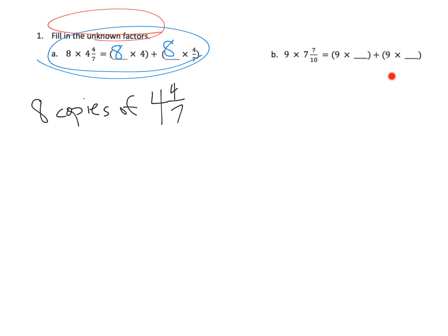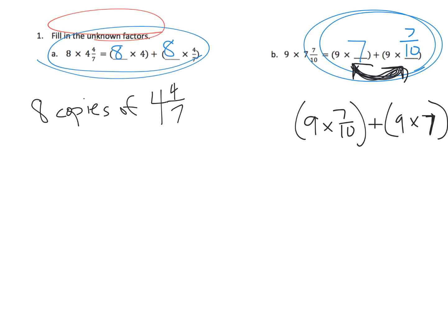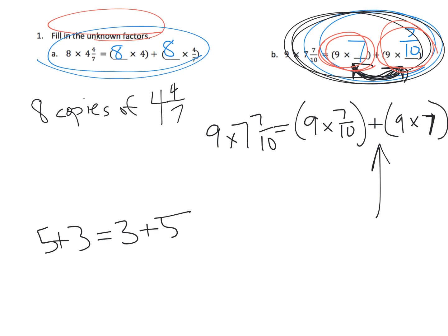In the same vein, this says we're going to have nine copies of seven and seven-tenths. So that means we're going to have nine copies of seven and nine copies of seven-tenths. Parents and teachers, if your students ask whether they can reverse these two — nine copies of seven-tenths and nine copies of seven — the answer is yes. Traditionally we wouldn't, but because addition is commutative, like five plus three equals three plus five, you can reverse the order and still be correct.